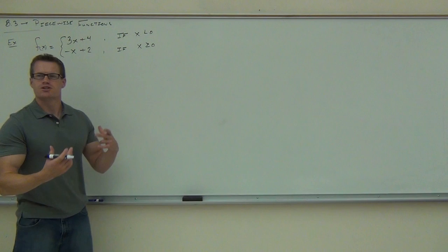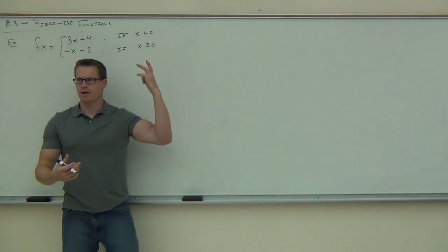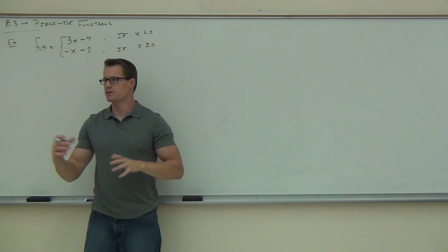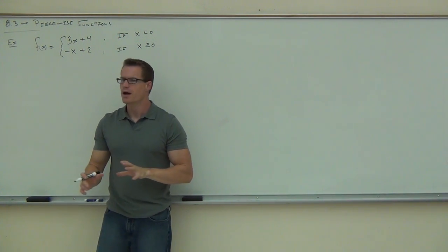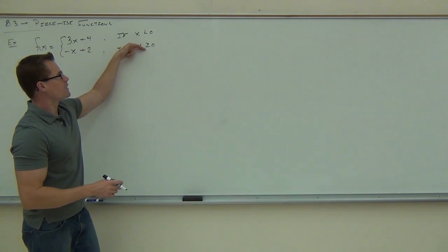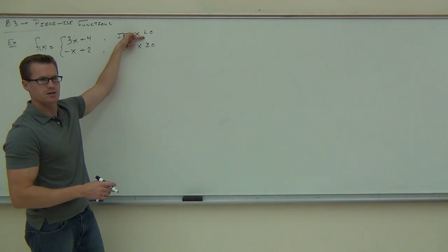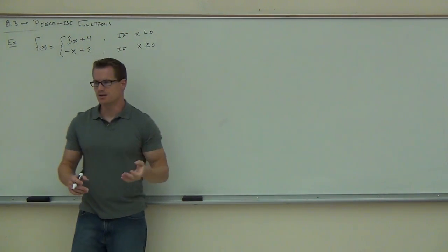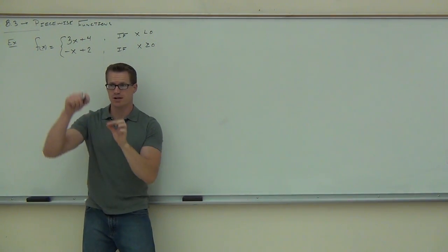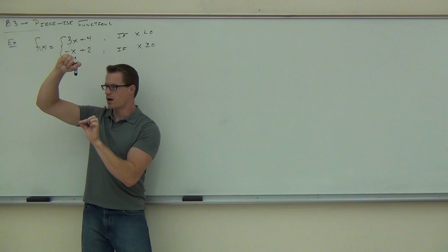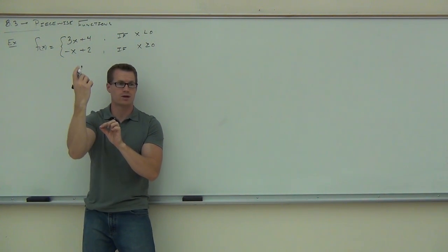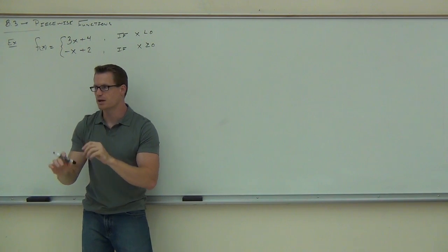Do you see how one of these has the equals and one of them doesn't? That has to be the case — they can't both have equals. Otherwise, you wouldn't have a function because you'd have two points for one spot. So you've got to have a strictly less than or greater than in some case.